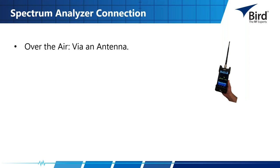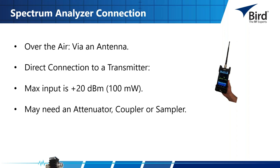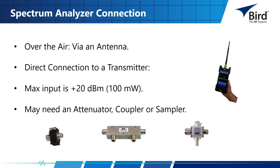There are several ways to connect a spectrum analyzer and look at a signal. One way is to pull a signal over the air using an antenna. Another is a direct connection to a transmitter — though you must realize the spectrum analyzer has a maximum input. For the SH60STC, the max input is +20 dBm or 100 milliwatts. You may need an attenuator, a coupler, or a sampler when connecting directly to a transmitter or radio.